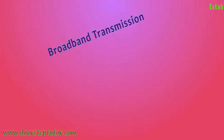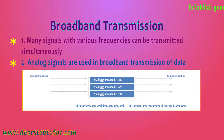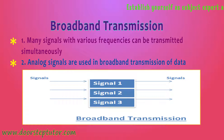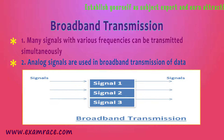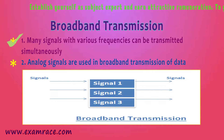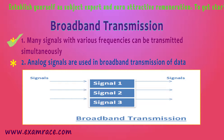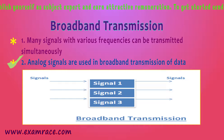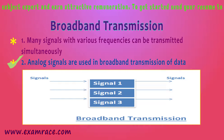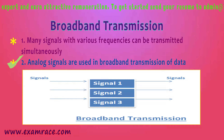Our next slide is broadband transmission. Under broadband transmission, many signals work simultaneously. We can see in the diagram that there are three signals — signal 1, 2, and 3 — working on the bandwidth at the same time simultaneously. The first point is many signals with various frequencies can be transmitted simultaneously. The second important point is analog signals are used in broadband transmission of data.